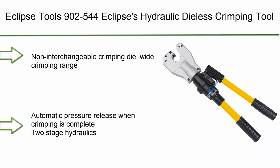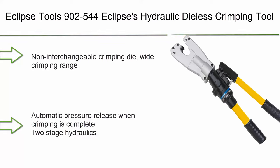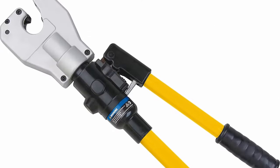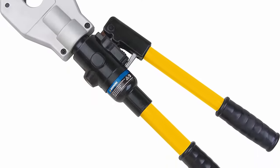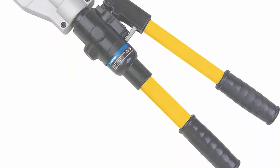Top 3: Eclipse Tools 900-2544, Eclipse's Hydraulic Dialess Crimping Tool, Non-Interchangeable Crimping Die, Wide Crimping Range, Automatic Pressure Release When Crimping is Complete, 2-Stage Hydraulics.